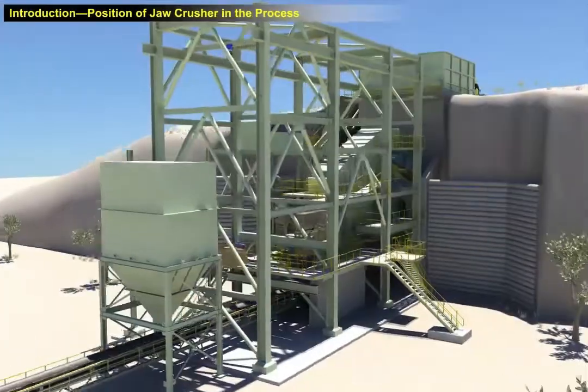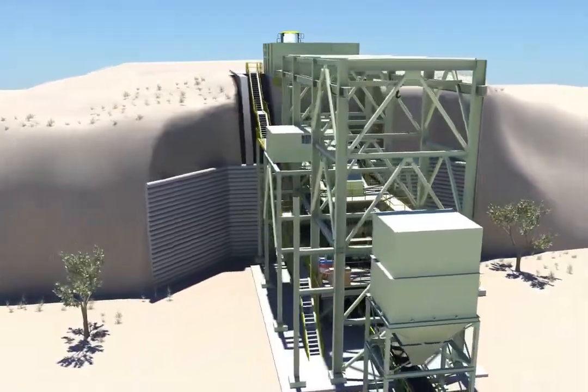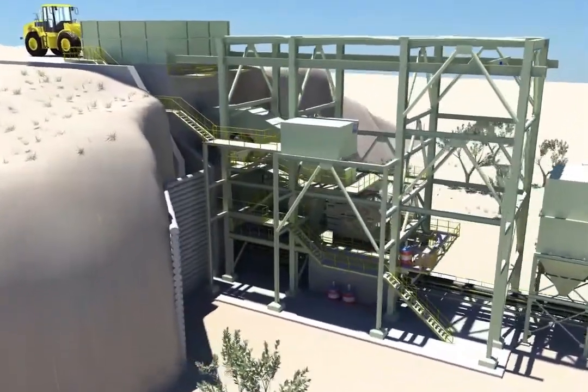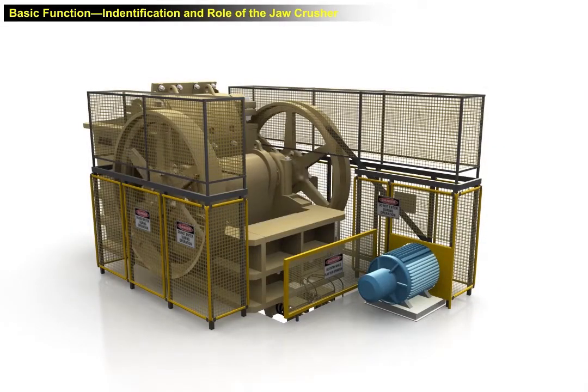Introduction: Position of jaw crusher in the process. The purpose of the crushing area is to reduce the run of mine ore to an optimal size for processing in the downstream grinding circuit. Basic function, identification and role of the jaw crusher.